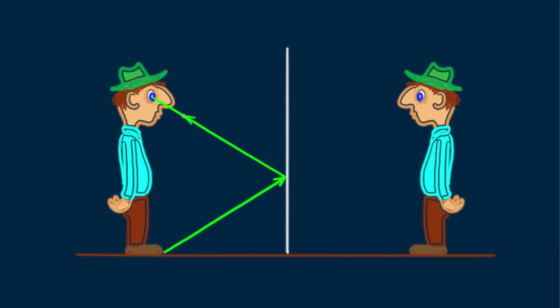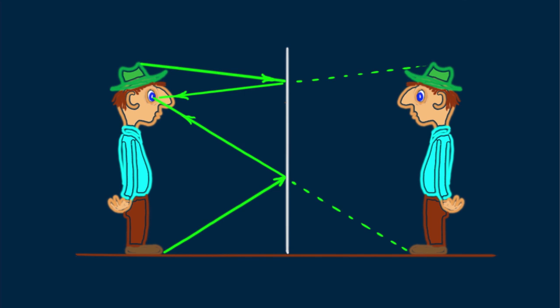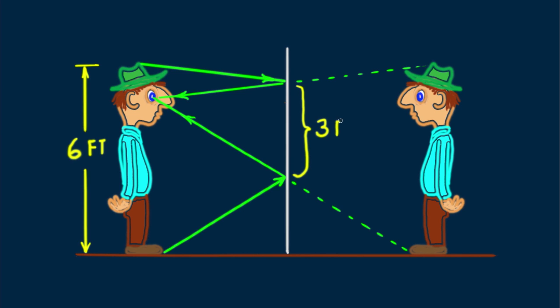Rays in other directions would reach below, above, or off to the side of his eyes. Let's look at light from his hat that reaches the mirror. Of the many possibilities, only this ray will reflect from the mirror to Blinky's eye. The lower ray extends to his twin's feet — light from his twin's feet is what reaches his eye. Likewise with light from his hat, which appears to come from Blinky Bill's twin. If Blinky Bill is six feet tall, how tall is the part of the mirror that provides a full-height image? Can you see it's three feet?